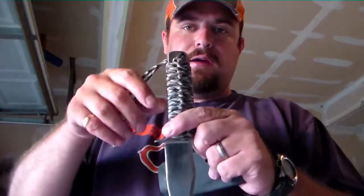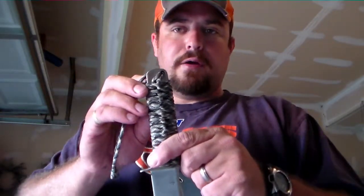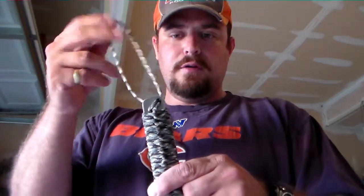The blade on this guy is four and a quarter long, I'll give you the actual specs, we'll do a tabletop later. And it's got a 550 cord wrapped handle, there's 10 feet of gutted paracord here, and there is 15 feet of filled paracord. So that can actually be taken off and used.